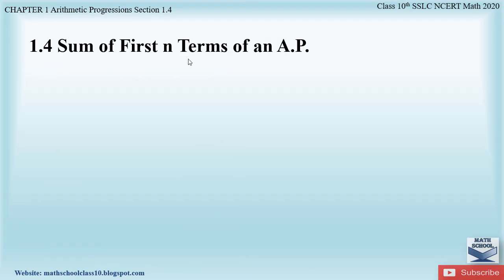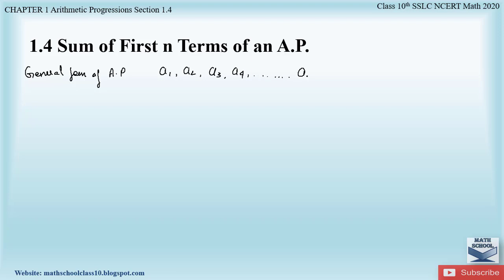Let us first understand what the sum of the first n terms of an AP means. We already know how to write the general form of an AP: the first term a₁, second term a₂, third term a₃, up to the nth term aₙ. We can find the first term a, the common difference d, any term, or the nth term — these are the types of problems we solved in the previous exercises.